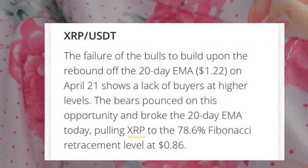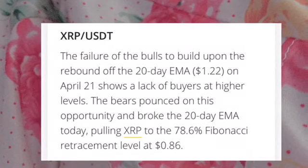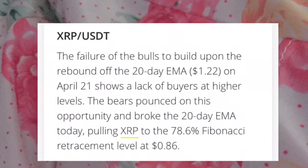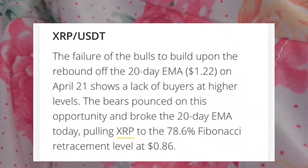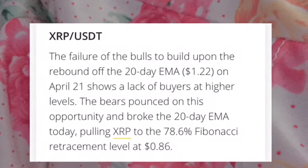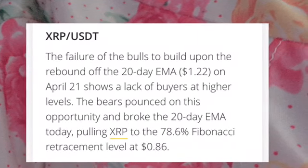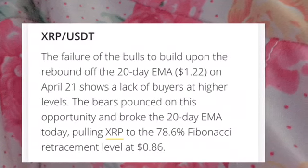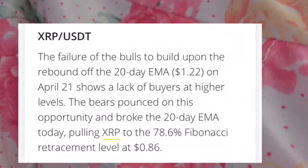I'm going to use the XRP/USDT pair. The failure of the bulls to build on the rebound of the 20-day exponential moving average at $1.22 on April 21 shows a lack of buyers at higher levels. The bears took this opportunity and broke the 20-day EMA today, pulling XRP down to the 78.6% Fibonacci retracement level at $0.86.